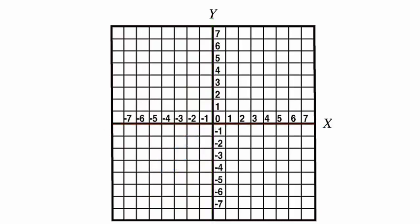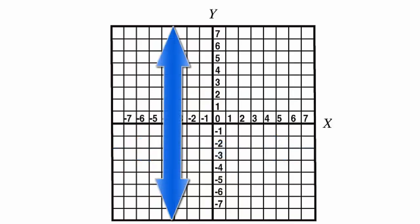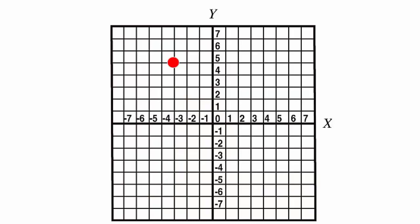Any location on the flat page or screen can be uniquely located by how far to the left or right it is of the y-axis and how far above or below it is of the x-axis. The sample point has a unique set of coordinates of minus 3 and positive 5.